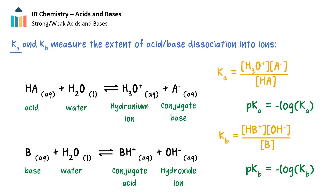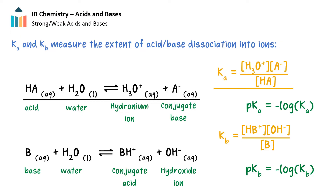For acids, this is the Ka, and for bases, this is the Kb. In a general equilibrium reaction of an acid in water which dissociates into a hydronium ion and a conjugate base, the Ka is defined by the following equation. The Ka is equal to the concentration of hydronium ions times the concentration of the conjugate base over the concentration of the acid, all at equilibrium.